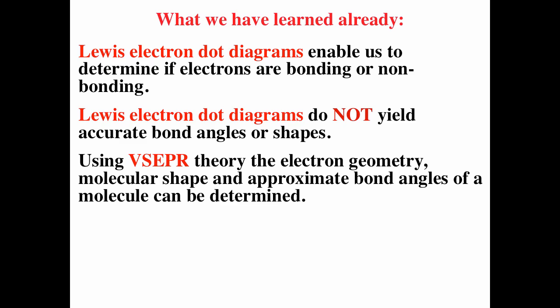Howdy. So what have we learned? We've learned that Lewis electron dot diagrams enable us to determine if electrons are bonding or non-bonding electrons, but that Lewis diagrams themselves do not accurately represent the structure. Lewis diagrams are just two-dimensional representations, so you cannot determine bond angles from them. We've learned that VSEPR theory does enable us to determine the electron geometry, molecular shape, and bond angles of molecules.